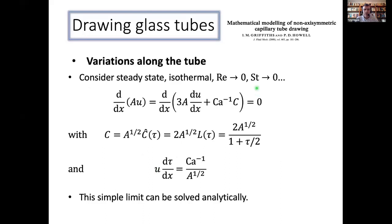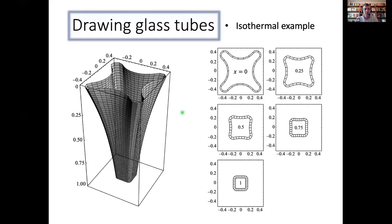And so again, this is work with Ian. And again, I don't want to dwell on all the details, except to say that, as I said before, once we've worked out how this circumference function is evolving, then we can close the problem for how the variations happening along the tube. And we can solve the whole problem in this case, analytically. So again, I'm just going to show you some examples here before I run out of time.